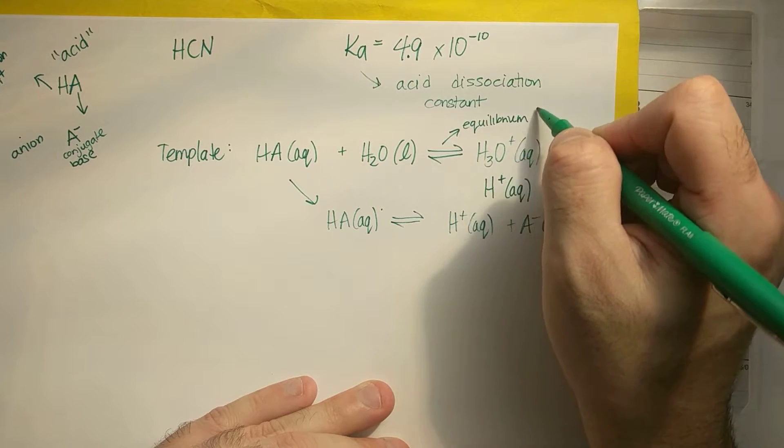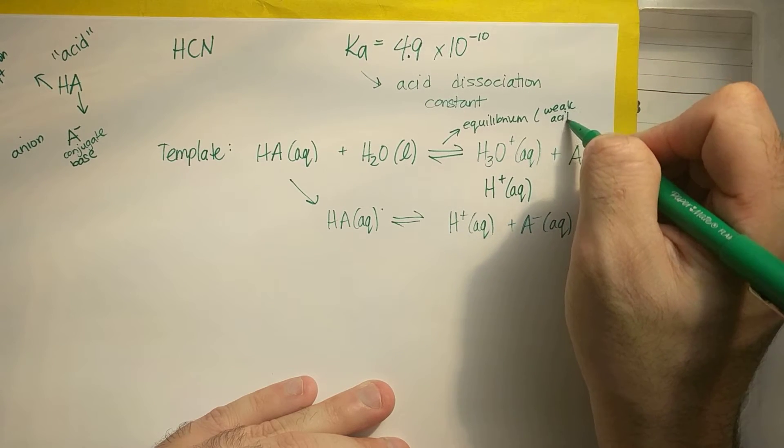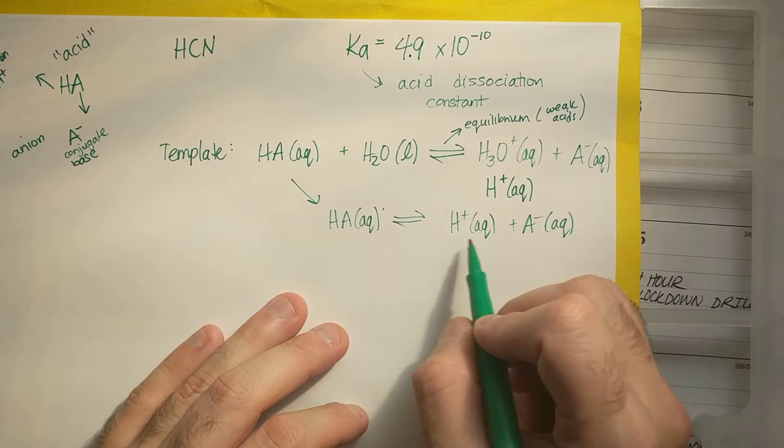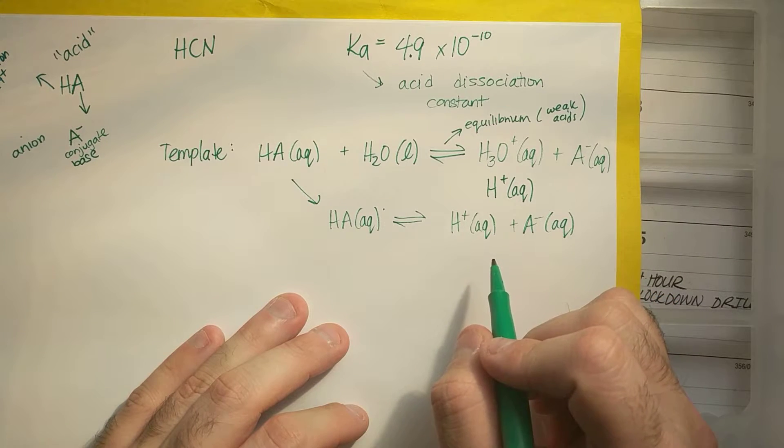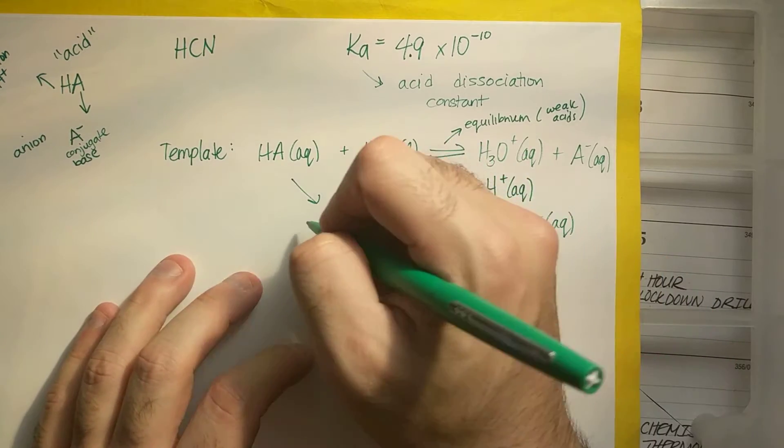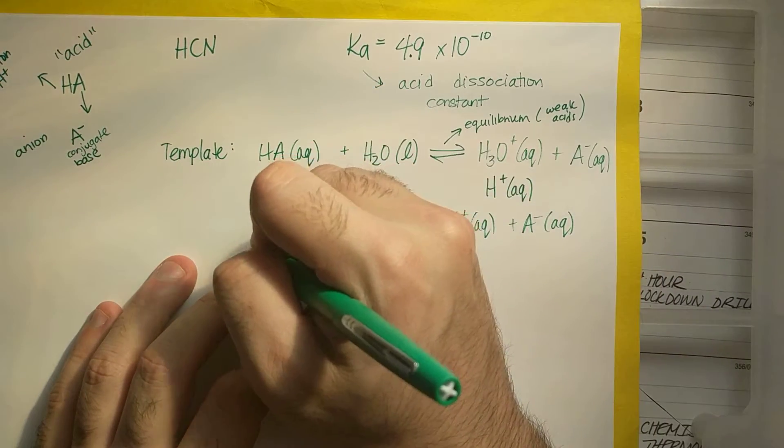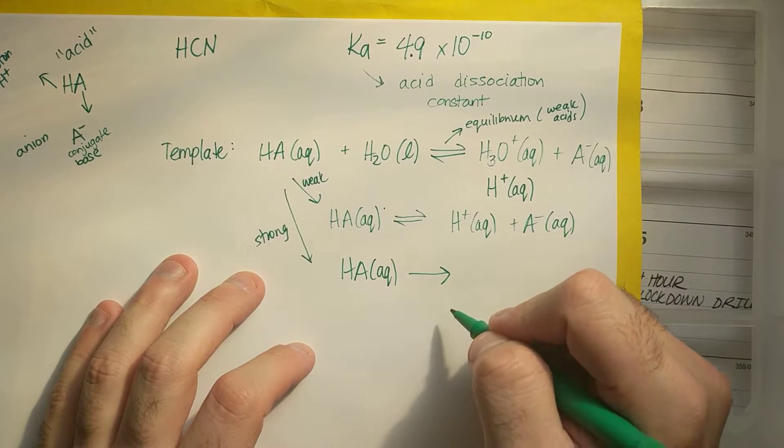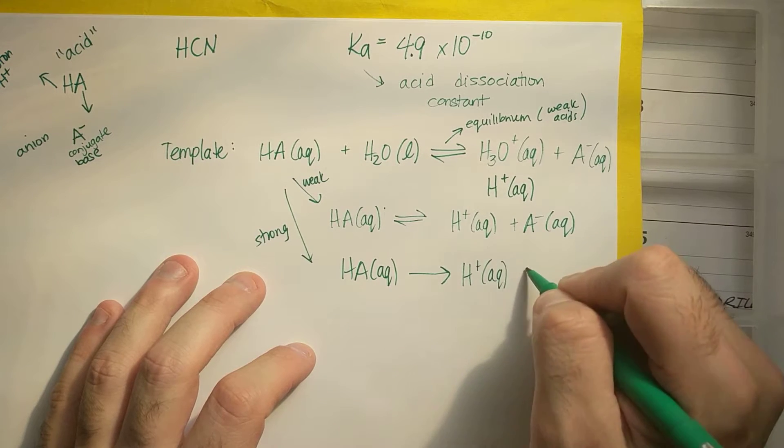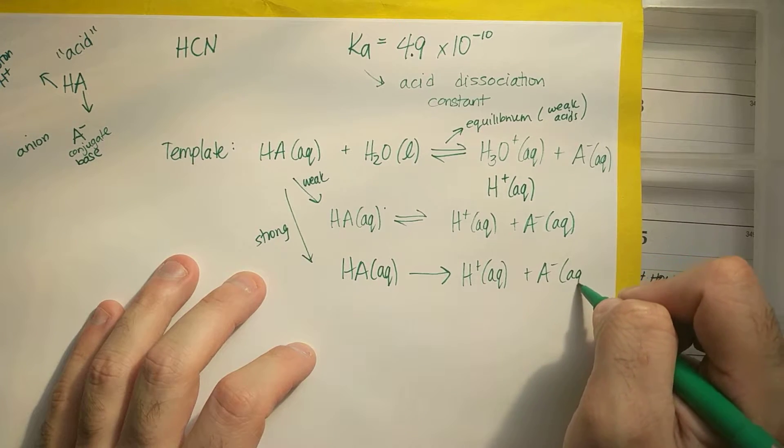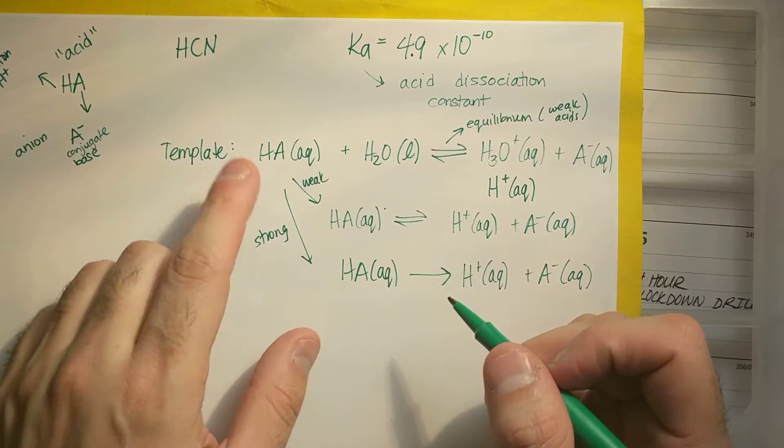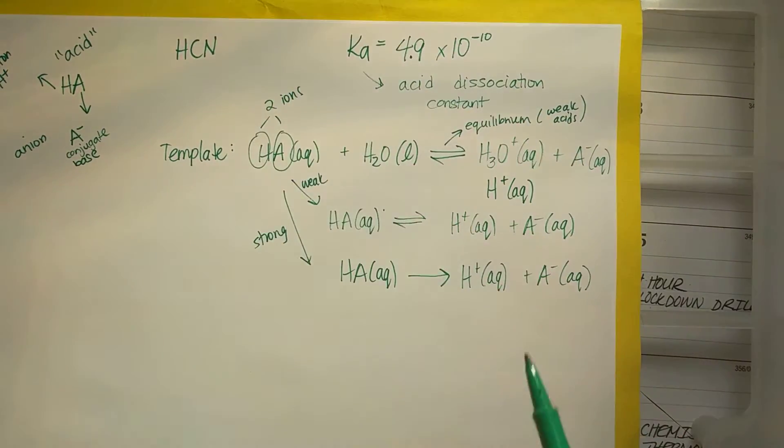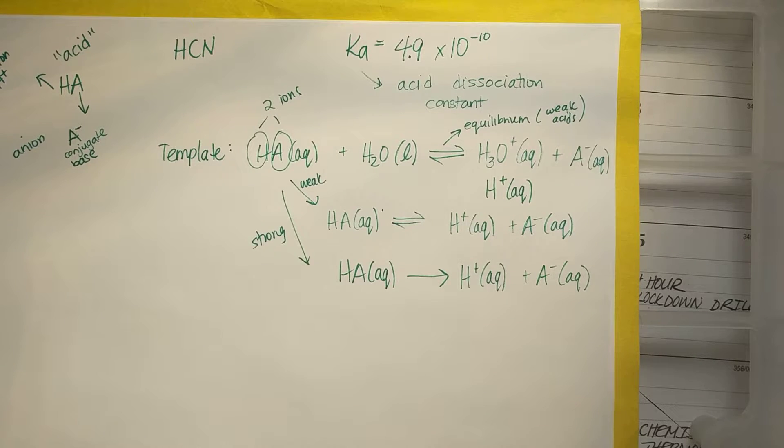And that's because they're weak acids. I would not do this if it was a strong acid. I wouldn't have the arrows. Although I could still write the equation like this, I have an equilibrium. If I had, and this would be a weak acid, if I had a strong acid, I would have HA one arrow H plus plus A minus. And so basically, what I'm doing is I'm breaking apart the two ions that are in the acid. And an ion is anything that's positively or negatively charged.